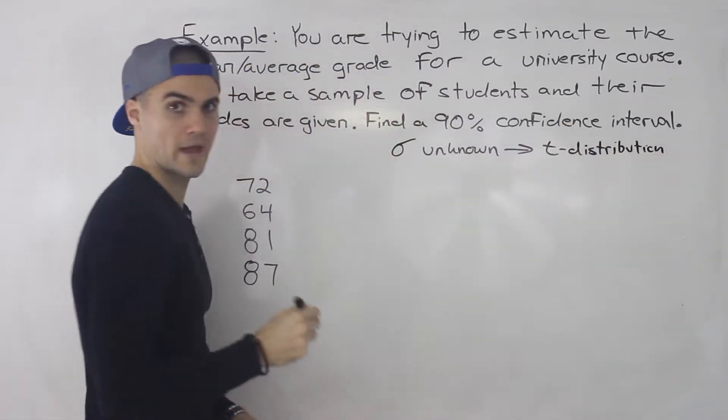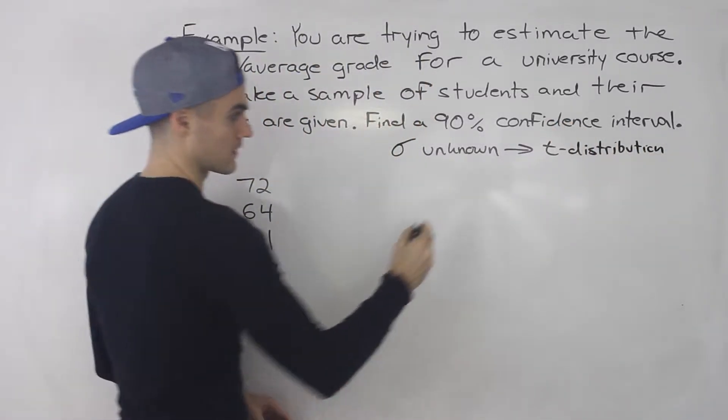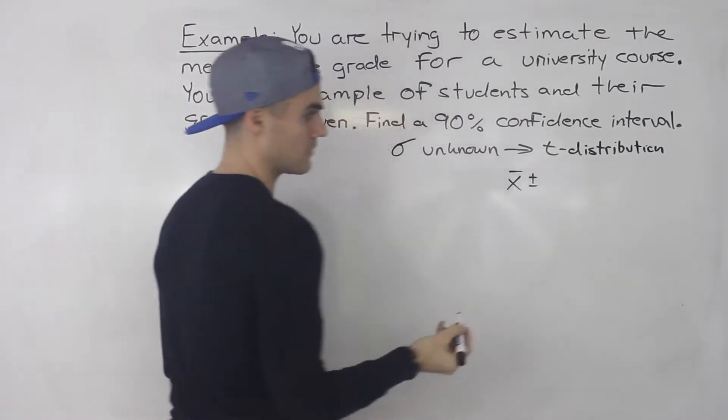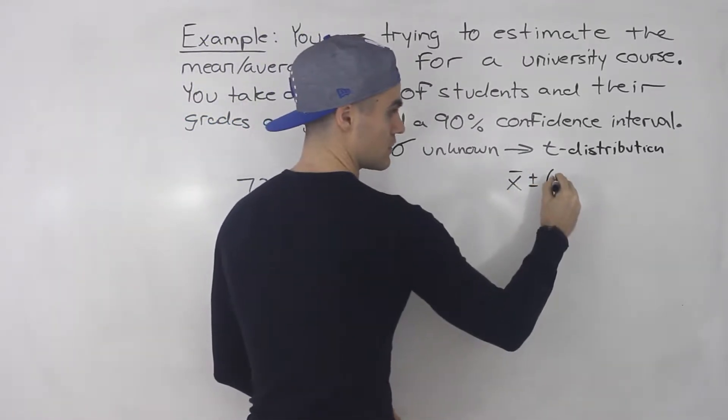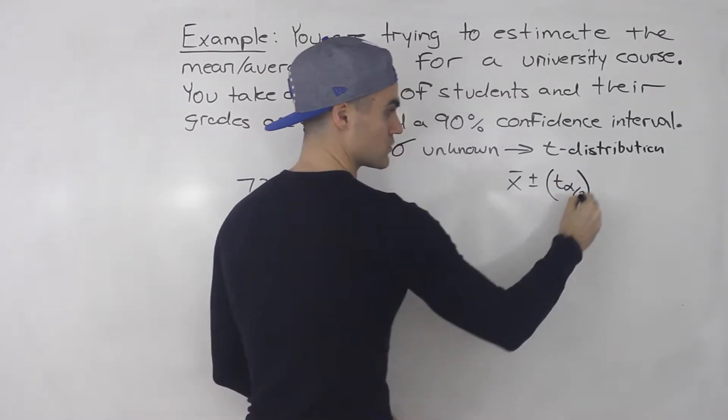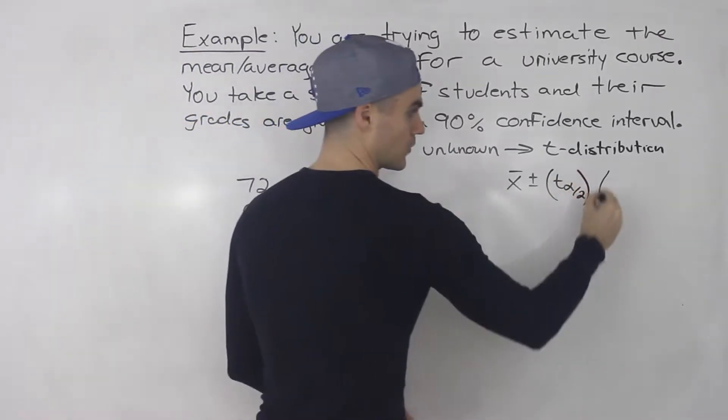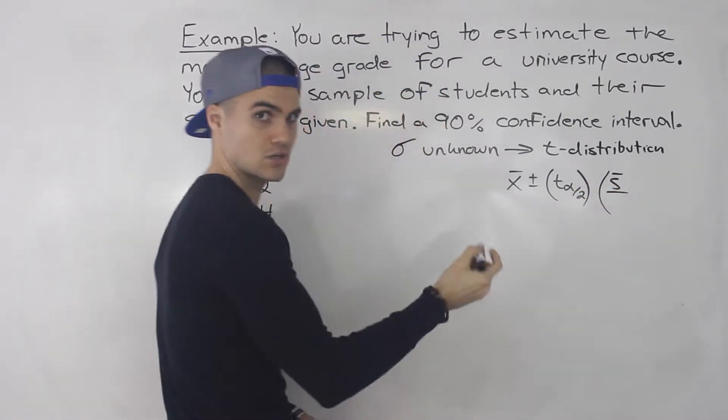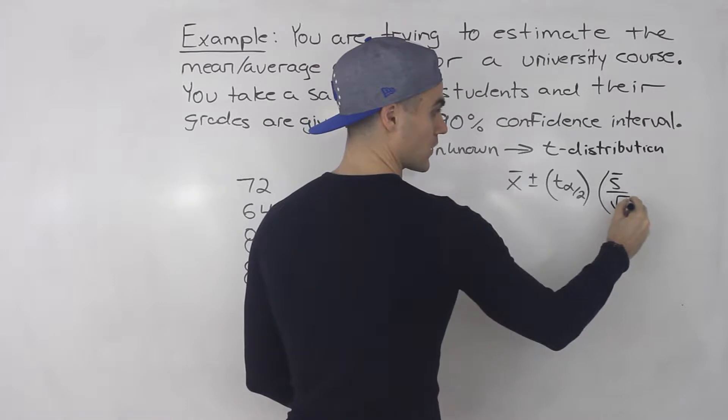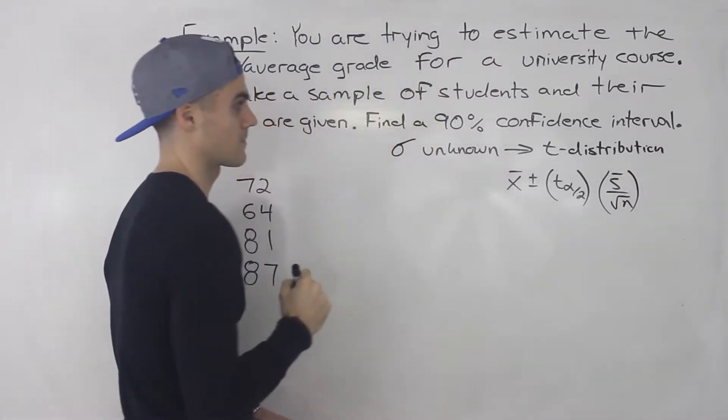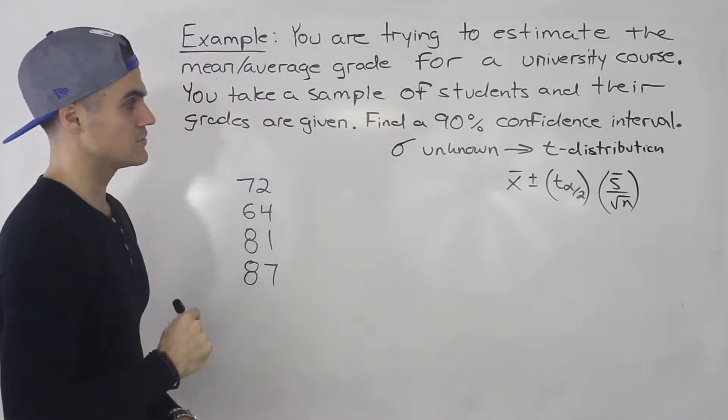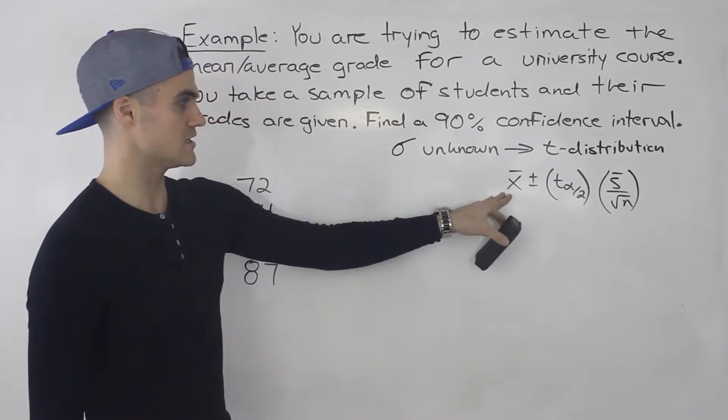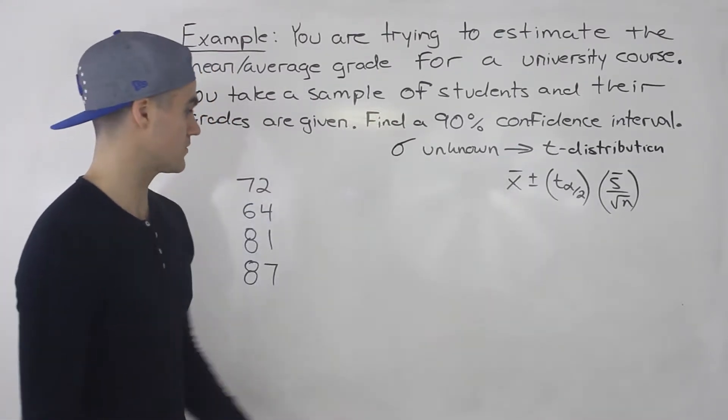And so what's the format of the confidence interval going to be? Well it's going to be x bar plus or minus the t value subscript alpha over 2. And then we're going to have the sample standard deviation over the square root of n, the sample size. So what we got to do now is find a bunch of these parameters. So let's start off with the easiest one. I feel like it's this x bar over here.